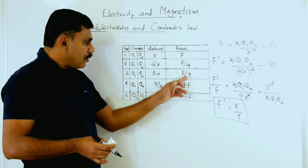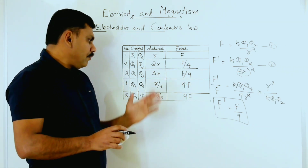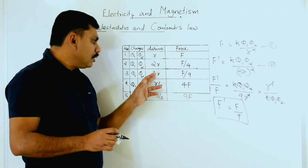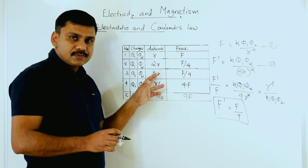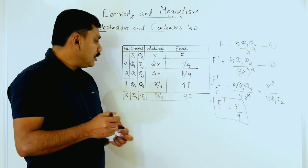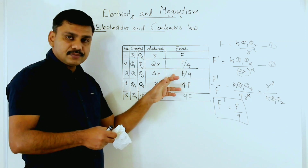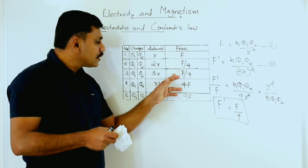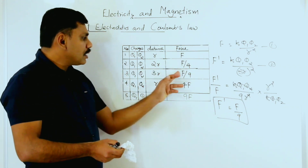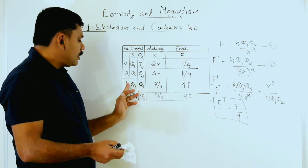So the new force is F/9. When you increase the distance — here the distance became three times the previous value — the force decreases. It is reduced to one-ninth of the previous value, giving F' = F/9.